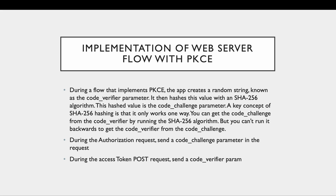Now why does this work? We have two additional parameters - the code verifier and the code challenge. A key concept here is that you can get the code challenge from the code verifier by running the SHA256 algorithm. We pass the code challenge in the authorization request, and we pass the code verifier in the POST request. Salesforce then runs the SHA256 algorithm to verify that the code challenge from the authorization request matches the code verifier string. If not, authorization fails. Crucially, we can't run it backwards - we can't derive the code verifier from the code challenge.